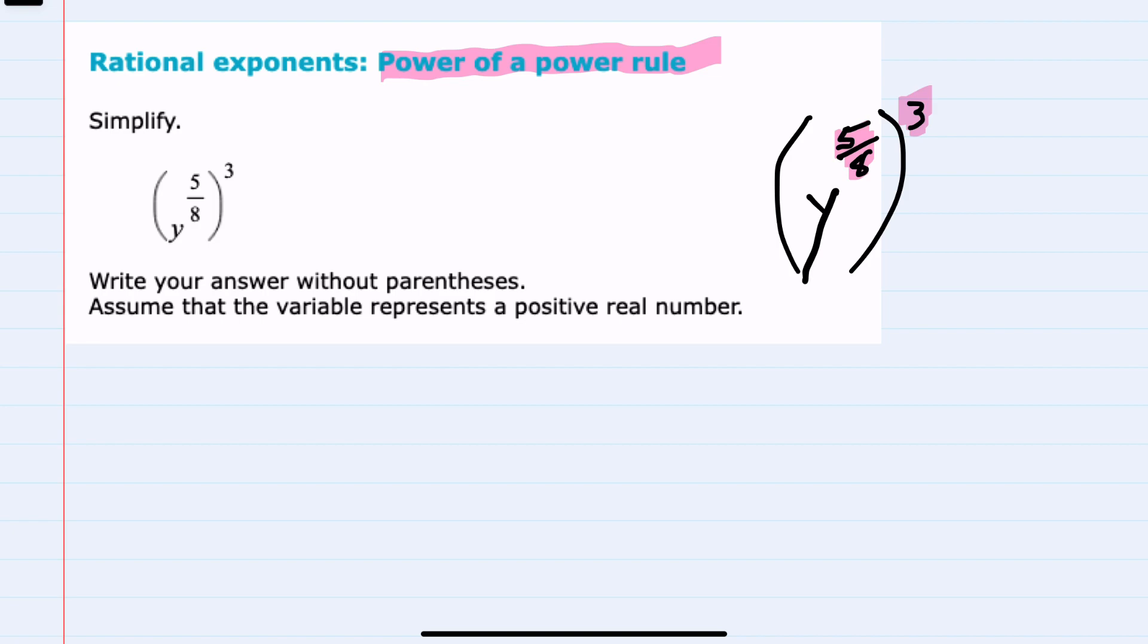That's the power of a power rule, which says that we would keep that variable base, y, and to simplify, we can combine these exponents by multiplying them.